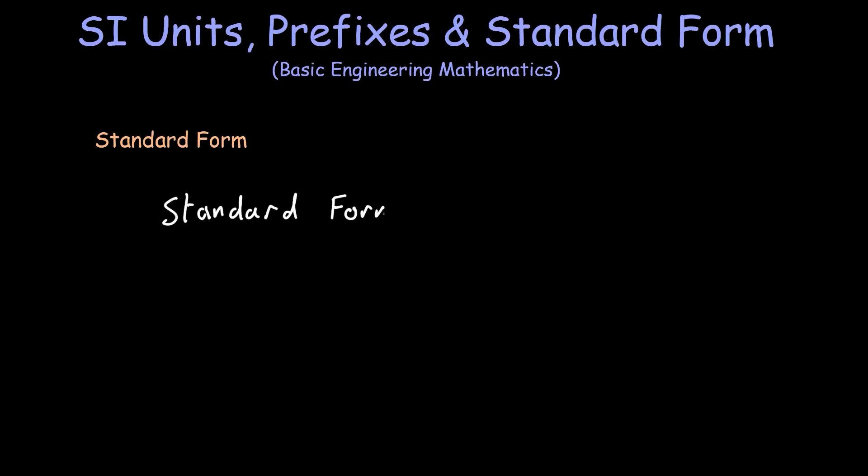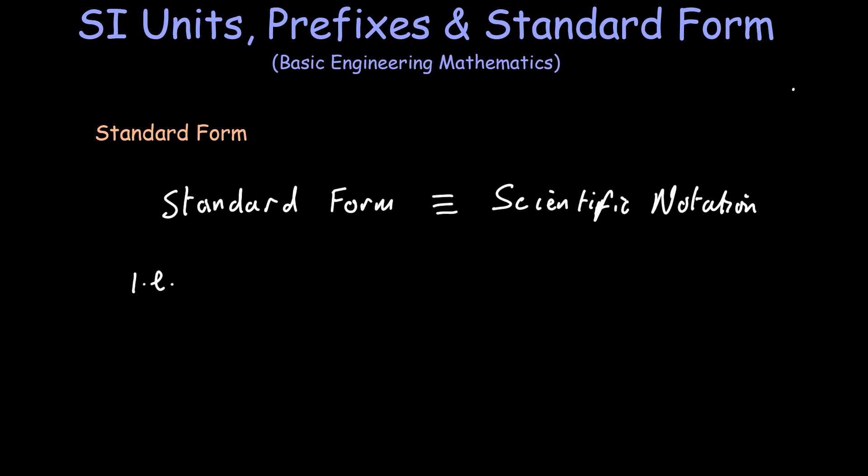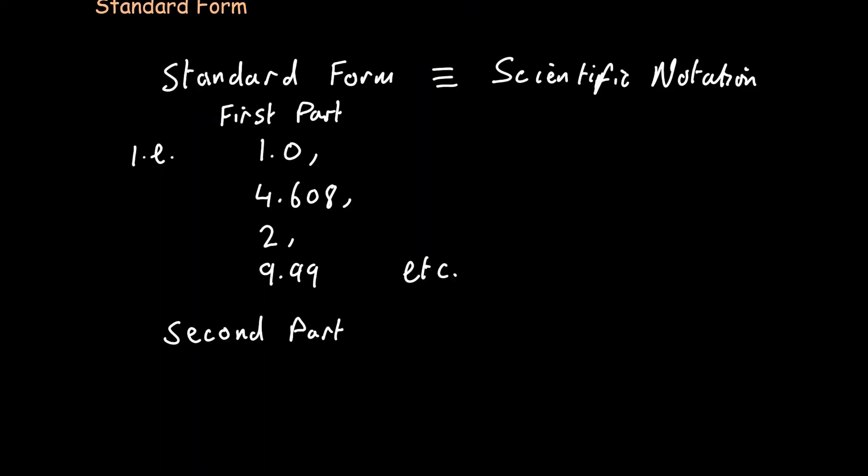Standard form, also known as scientific notation, makes performing calculations with very big or very small numbers a lot easier. It's based on using powers of 10 to express how big or small a number is. So a number in standard form consists of two parts. The first part is the decimal number ranging from between 1 and up to 10 but not including 10. The second part is the power of 10 which is a multiplier to the first number.